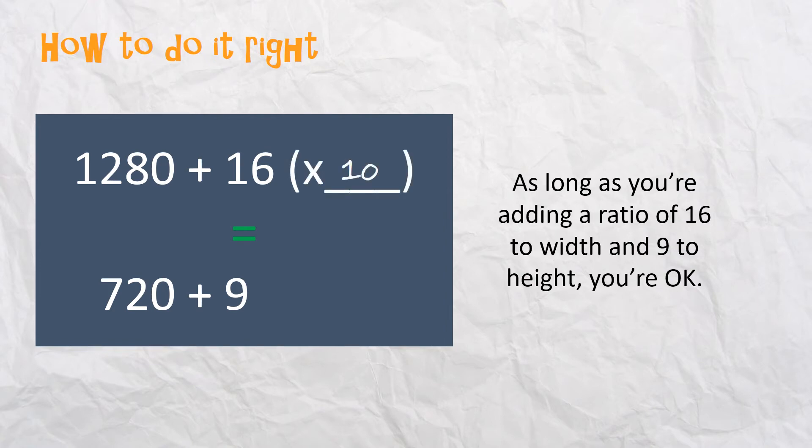So what you could do is multiply 16 by 10 and get 160 and add that in. And you could do the same thing here. 9 also times 10, get 90, and add it in. You'll still have the same aspect ratio.